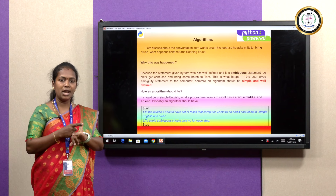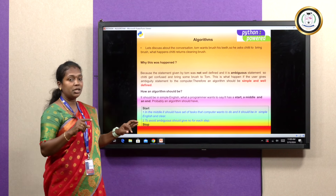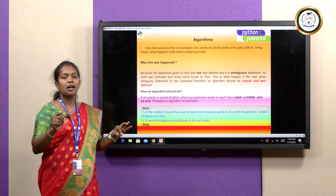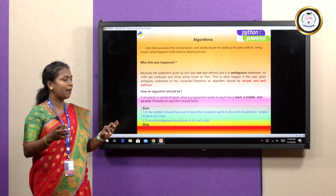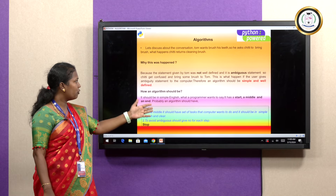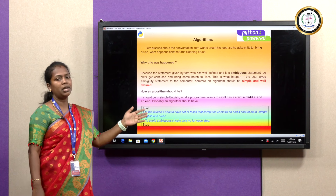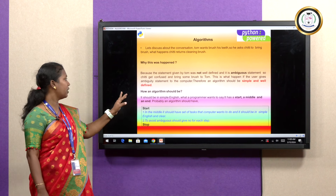The problem is that the statement was ambiguous. Your statement should be unambiguous. Chitty got confused and brought some brush. If the user gives an ambiguous statement to the computer, therefore the algorithm should be simple and well-defined.